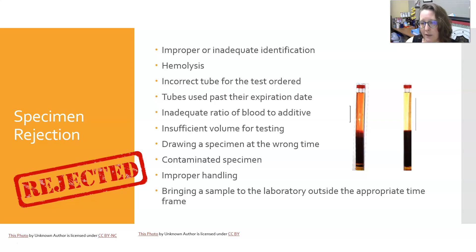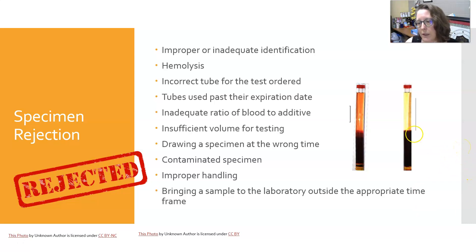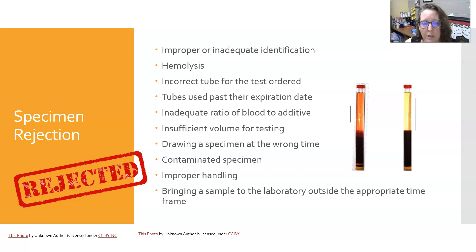Another reason for rejection is hemolysis. You will see this in tubes that have run through the centrifuge. Hemolysis — when hemoglobin is released from the cells — happens during collection, not during centrifugation; centrifugation simply reveals it by spinning the cells down. Normally, the plasma or serum should be a clear yellow color, and should not be red or red-tinged in any way.